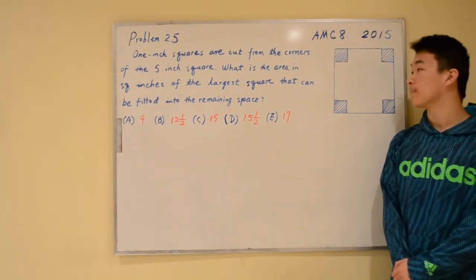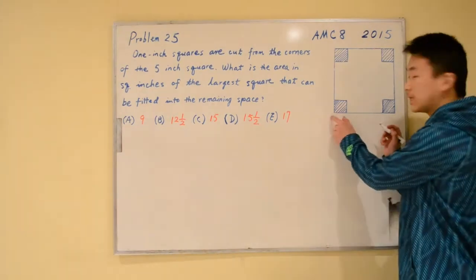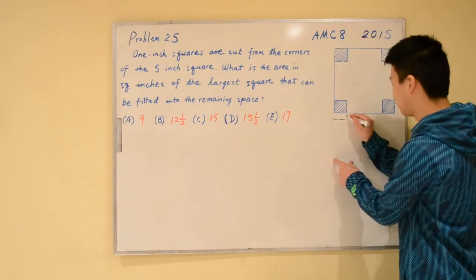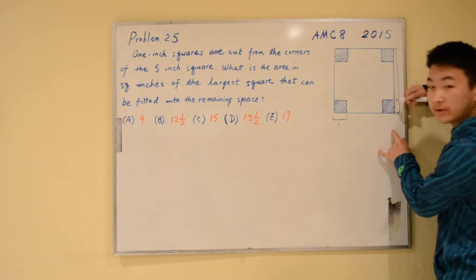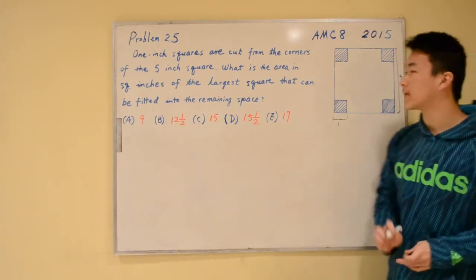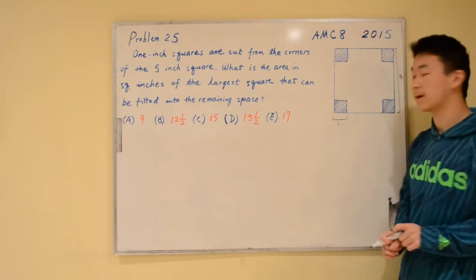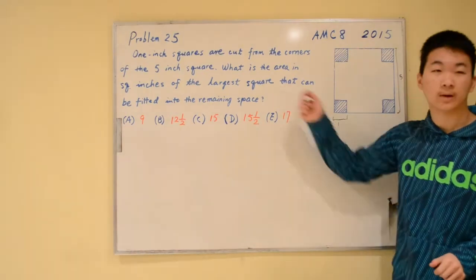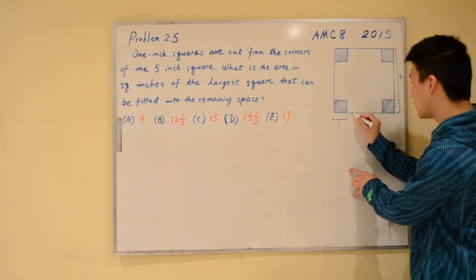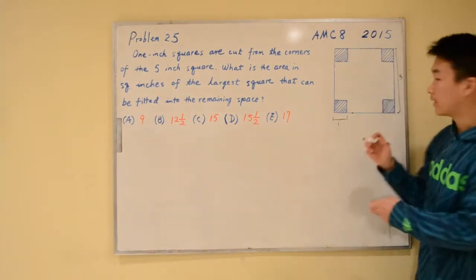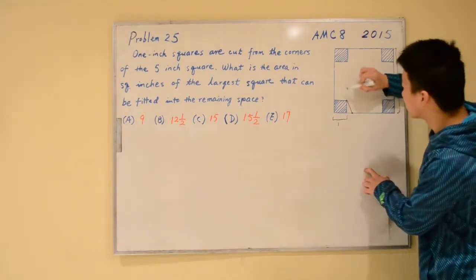The problem reads: 1-inch squares are cut from the corners of a 5-inch square. So these small squares have length 1 inch and this large square has length 5 inches. What is the area in square inches of the largest square that can be fitted in the remaining space? This largest square is the one whose vertices lie on the edges of the big square and whose edges pass through the vertices of the small squares.